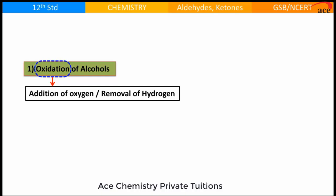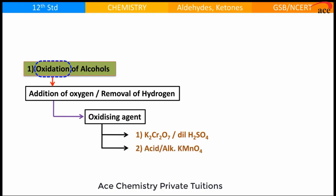In case of alcohols, we have some standard oxidizing agents. First one is K2Cr2O7, what we call it as acidified potassium dichromate followed by acidic or alkaline KMnO4. Even we can have CrO3, chromium trioxide or sometimes we call it as chromium anhydride.